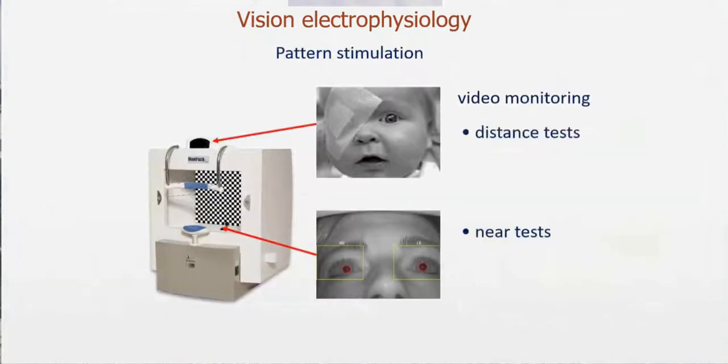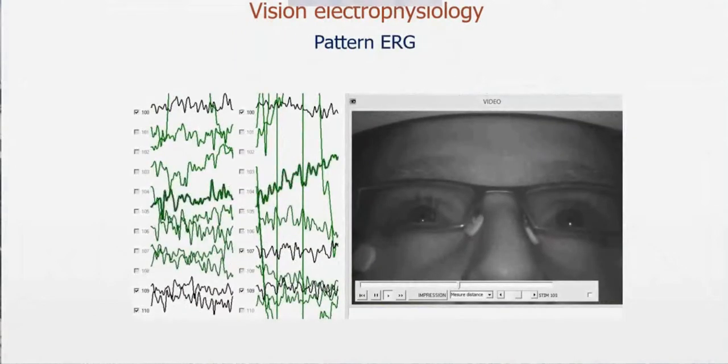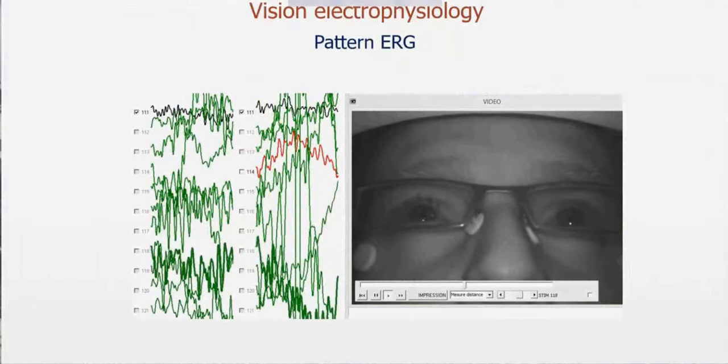One of the important features needed for electrophysiology is to monitor what the patient is doing. We have actually two cameras, one to monitor near vision tests like multifocal ERG or flash ERG, and one camera on the top to monitor exams which are performed at a distance of one meter. This is an option, but it's very important specifically if you deal with young children because you want to know if they are looking at the monitor or if you are dealing with malingering patients.